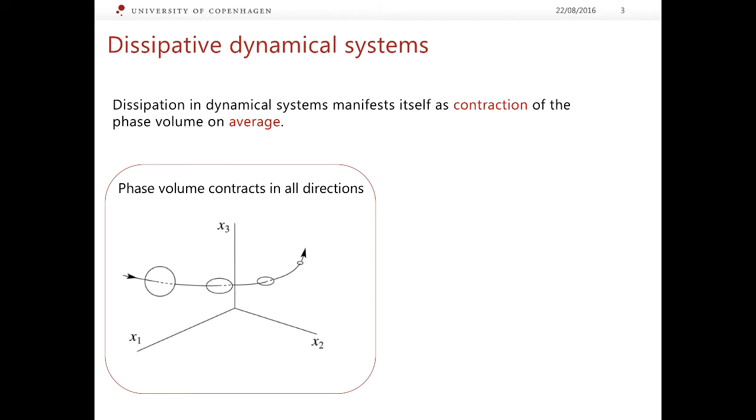One example, one possibility of such a contraction is illustrated in this figure and you can see that our cloud of points contracts in all directions. What happens to the phase volume with the course of time? It is not difficult to predict that the phase volume will eventually shrink to zero.